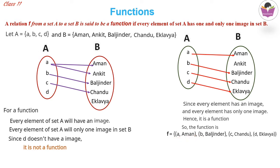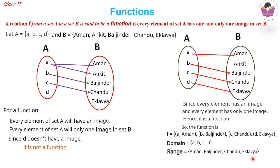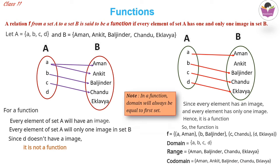We write the function as: {(a, Aman), (b, Baljinder), (c, Chandu), (d, Egalavia)}. The domain is {a, b, c, d} — the first set. The range is {Aman, Baljinder, Chandu, Egalavia} — only elements having a relation with set A. The codomain is all elements in set B. In a function, the domain is always equal to the first set.